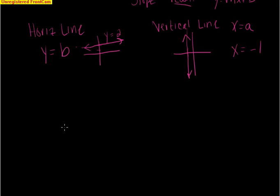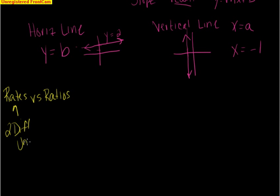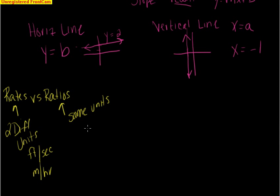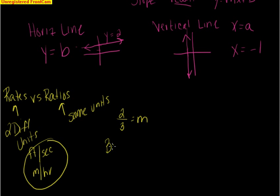The next idea is comparing rates and ratios. These are so similar that students often don't see the difference. Rates have two different units — think feet per second or miles per hour. Ratios compare two things with the same units. Slope is a ratio because you're working with units on a coordinate plane — for example, a slope of 2/3 means two units versus three units. When you have a rate, it's important to write your units. Both rates and ratios involve division.